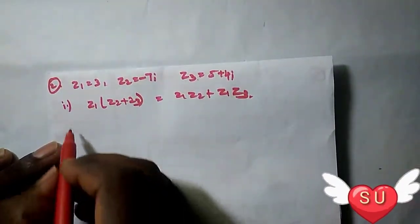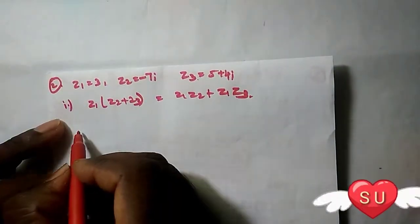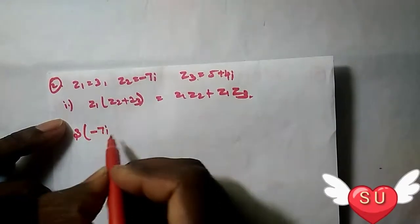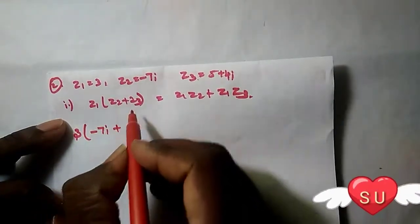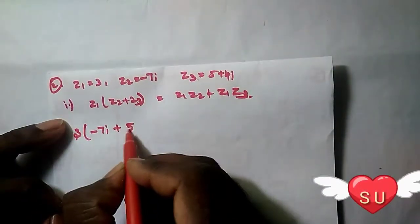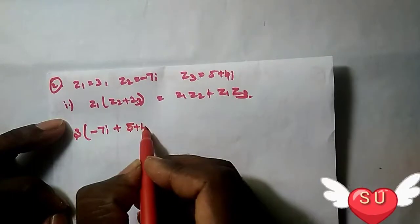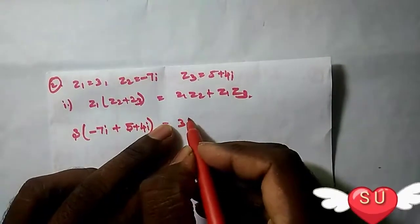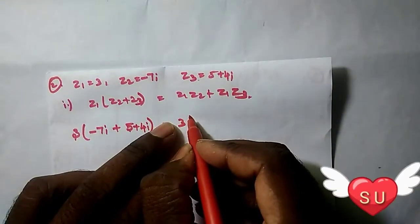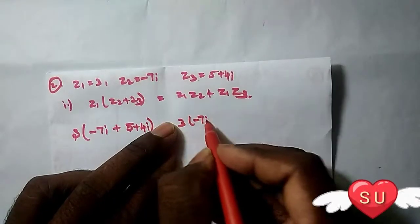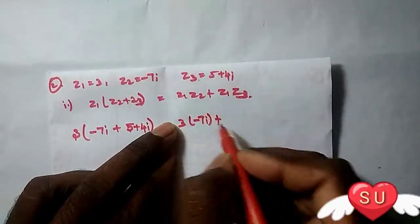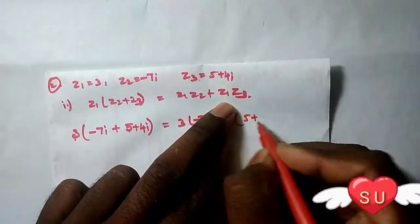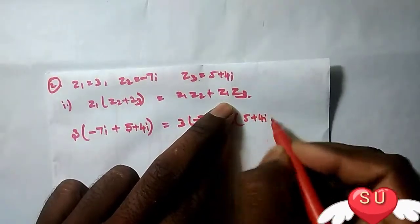This is the direct method. Z1 value is 3. Z2 value minus 7i plus Z3 value 5 plus 4i, equal to Z1 value 3 into Z2 value minus 7i, plus Z1 value 3 into Z3 value 5 plus 4i.